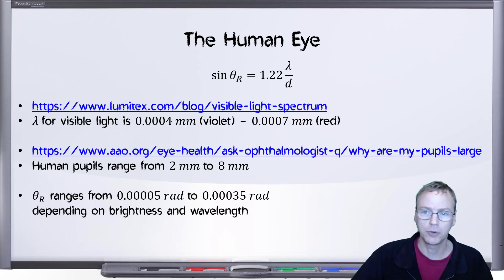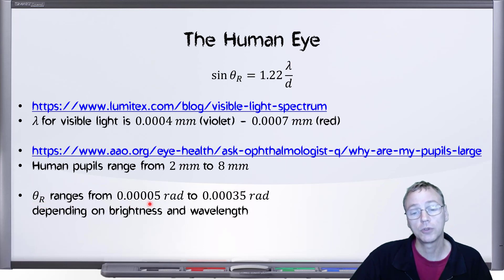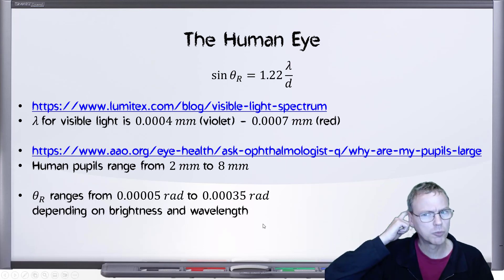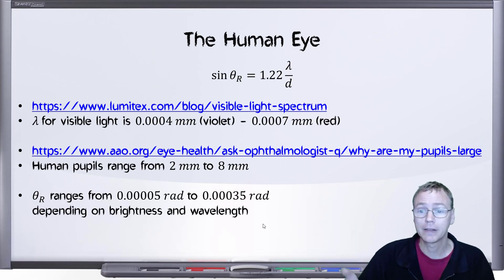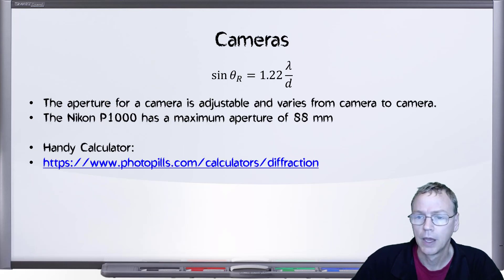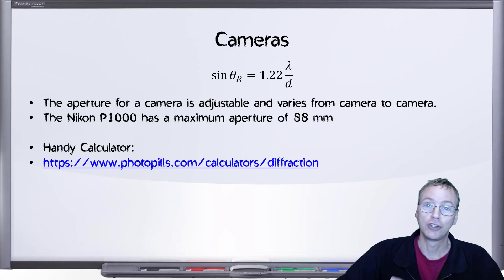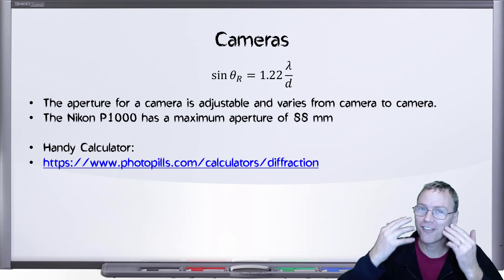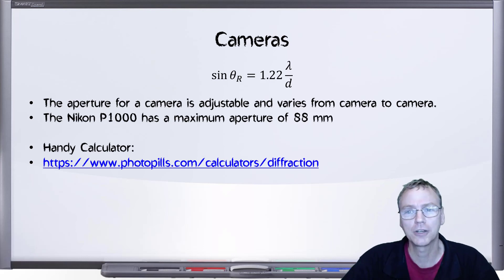So if we punch all those in, the maximum range here for the diffraction limit angle goes from 0.00005 radians to 0.00035 radians. That's quite the spread based on the wavelength and then also based on the pupil diameter. And we'll look at that in more detail in a future video. All the observations you're ever going to see on the internet are not coming from the human eye, because we can't share our visual images with each other. Instead, we have to take a picture, and that means a camera.